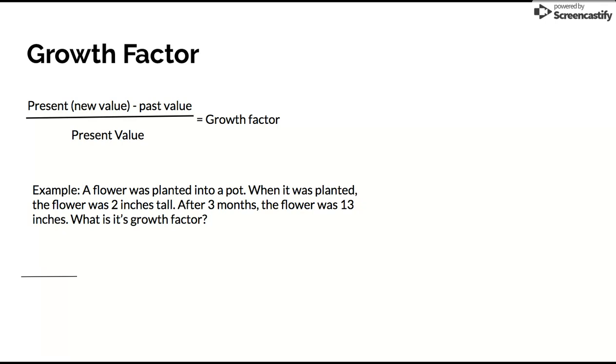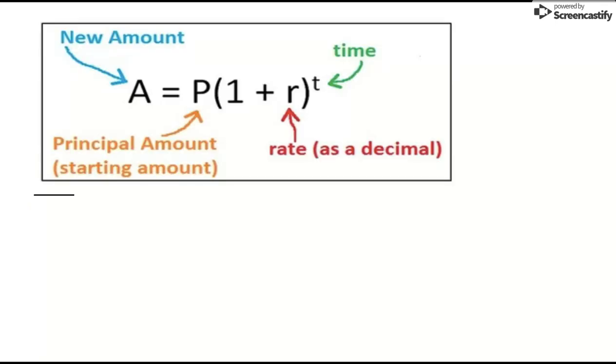After 3 months, the flower was 13 inches. What is the flower's growth factor? If we take the present value which is 13 minus the past value which is 2, divide it by the present value which is 13, you get 0.8461 inches.